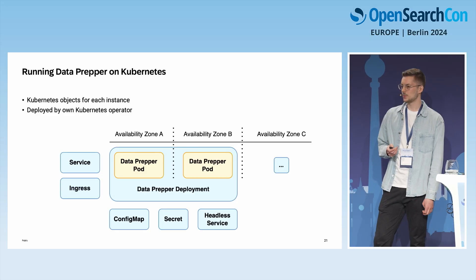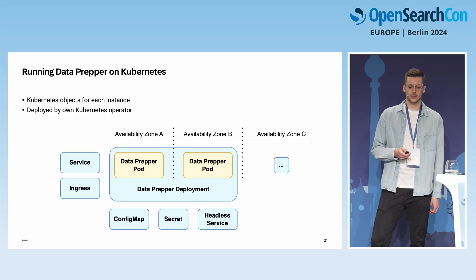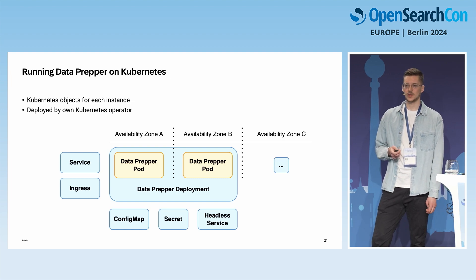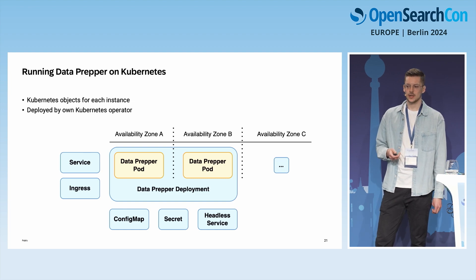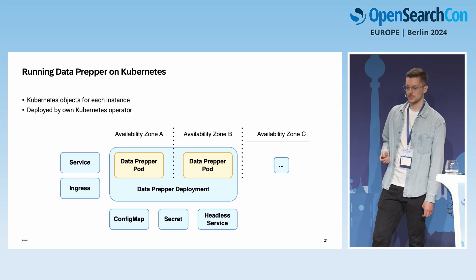All these Kubernetes objects are deployed in a separate namespace for each customer. To manage the deployments, we use a Kubernetes operator to automatically watch, reconcile, and apply updates to those objects.